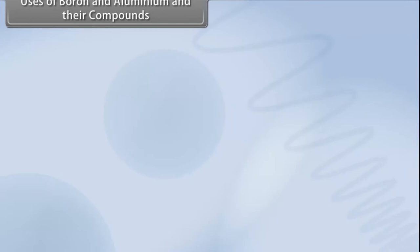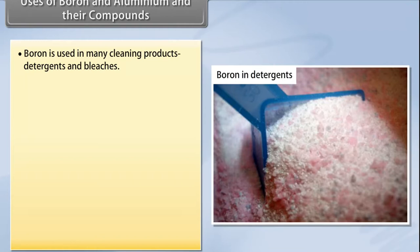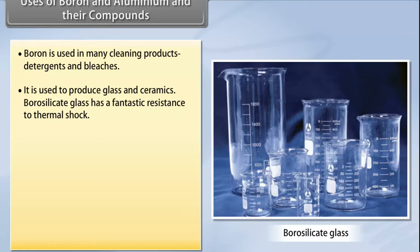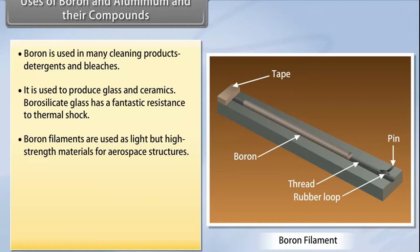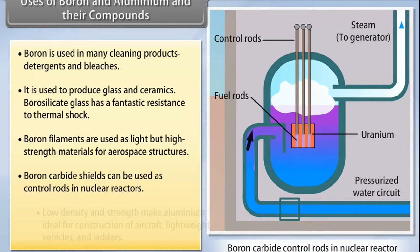Uses of boron and aluminium and their compounds: Boron is used in many cleaning products, detergents, and bleaches. It is used to produce glass and ceramics; borosilicate glass has fantastic resistance to thermal shock. Boron filaments are used as light but high-strength material for aerospace structures. Boron carbide shields can be used as control rods in nuclear reactors.